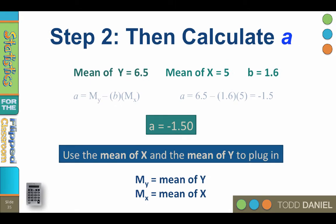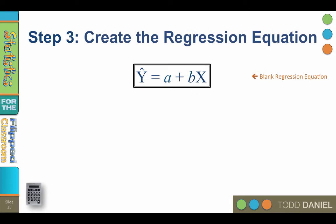Now that we know a and b, in step three, we return to the general regression equation so that we can plug them in. We know that a equals a negative 1.50 and b equals 1.6. So when we plug them in, we get y-hat equals negative 1.50 plus 1.6x. Remember that adding a negative, such as negative 1.50, is the same as subtraction.